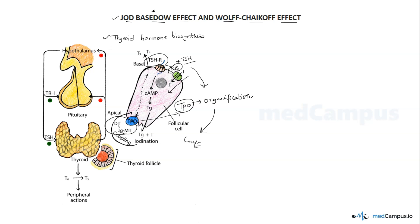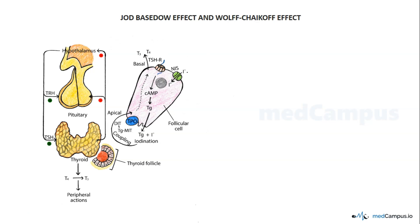Now, iodine plays a crucial role in the synthesis of thyroid hormone. When iodine is given in excess — not in regular amounts but in excess — there are two possibilities that can occur: iodine-induced hyperthyroidism and iodine-induced hypothyroidism.